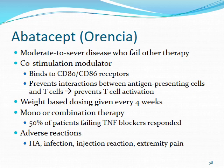Abatacept (Orencia) is a co-stimulation modulator — not a TNF-alpha blocker — that binds CD80 and CD86 receptors to prevent interactions between antigen-presenting cells and T cells, preventing T-cell activation. Used for moderate to severe disease after failure of other therapies. Weight-based dosing is given every four weeks, and about half of patients who failed TNF-alpha blockers respond to abatacept. Adverse reactions include headache, infection risk, injection reactions, and extremity pain.